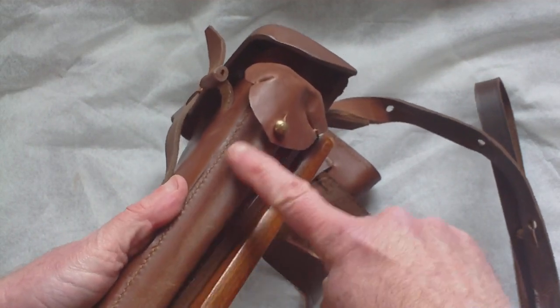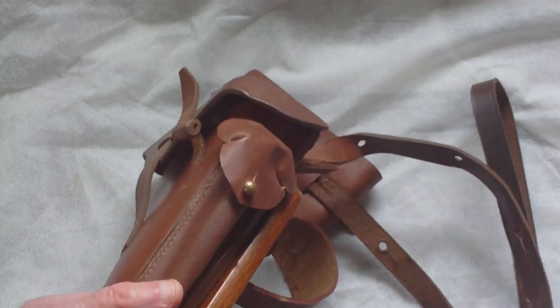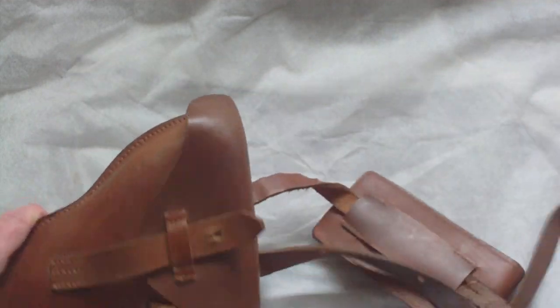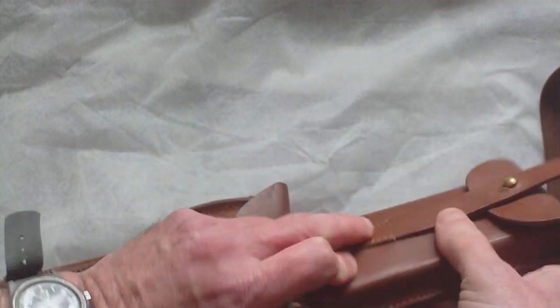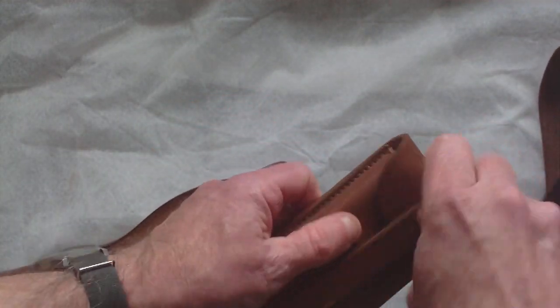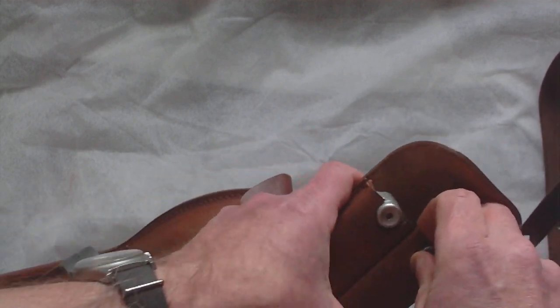Because the cleaning rod is in this side where you would have a spare mag pouch, the artillery Luger setup has an additional double pouch on the shoulder strap in which are kept two regular magazines.